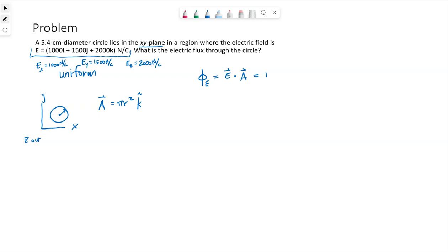We can write that also as EA cosine theta, where theta is the angle between specifically the area vector and the electric field vector, which would not be something easy to find when we're dealing with a three-dimensional electric field. The easiest thing to do in this problem is to actually do the dot product.